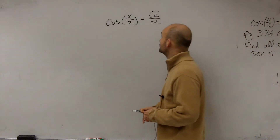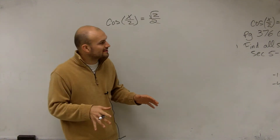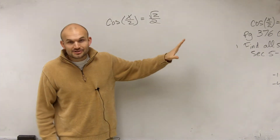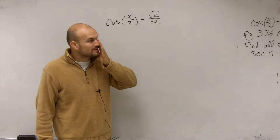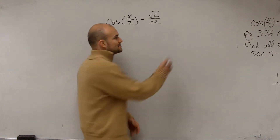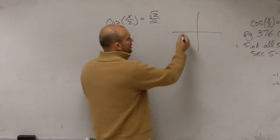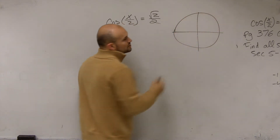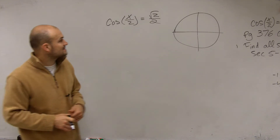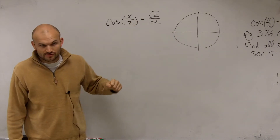So I have cosine of x divided by 2 equals square root of 2 over 2. The main important thing is I want you to find all of the solutions, not just the solutions between 0 and 2 pi. However, to get started, the first thing we want to do is find the solutions on 0 to 2 pi, because that's kind of our easiest way for us to understand all of our solutions.